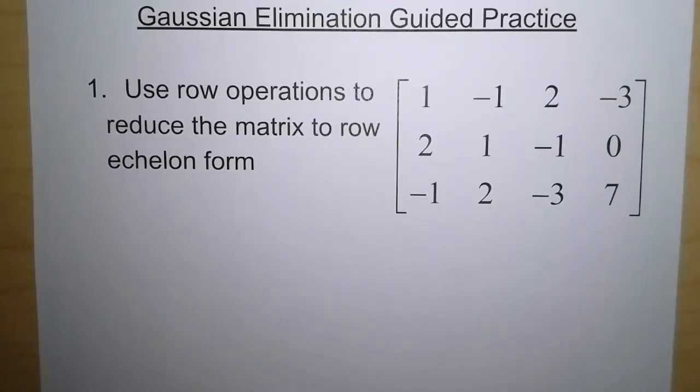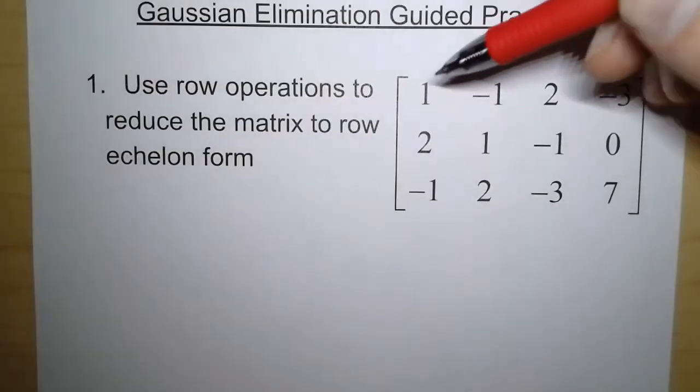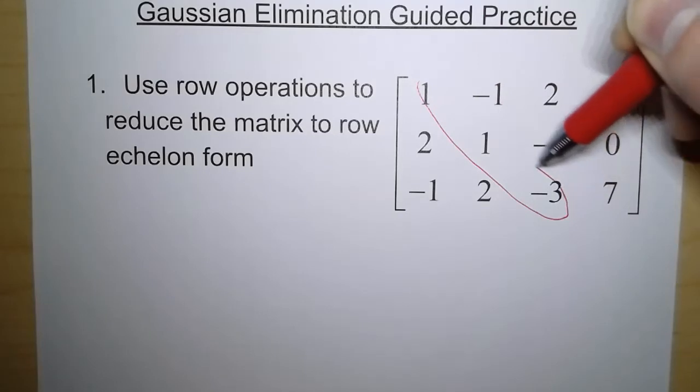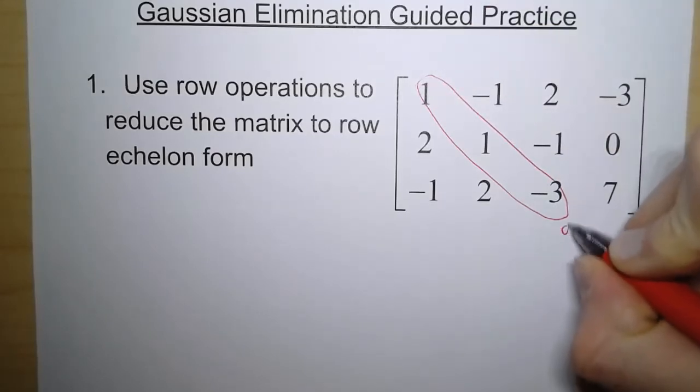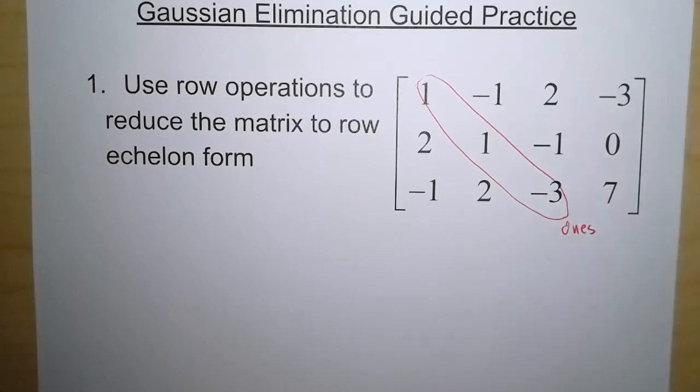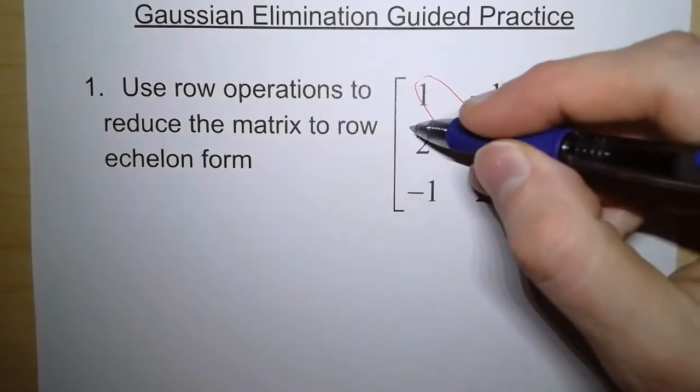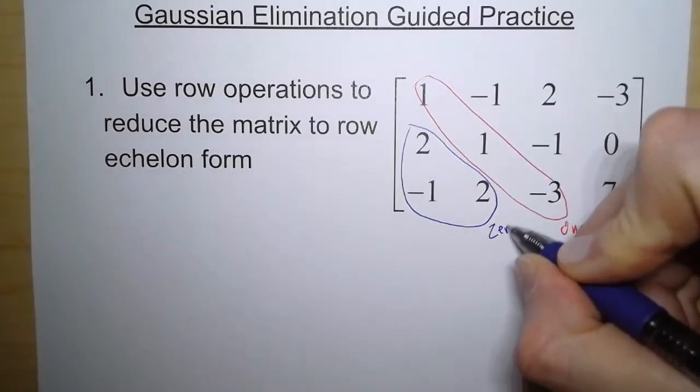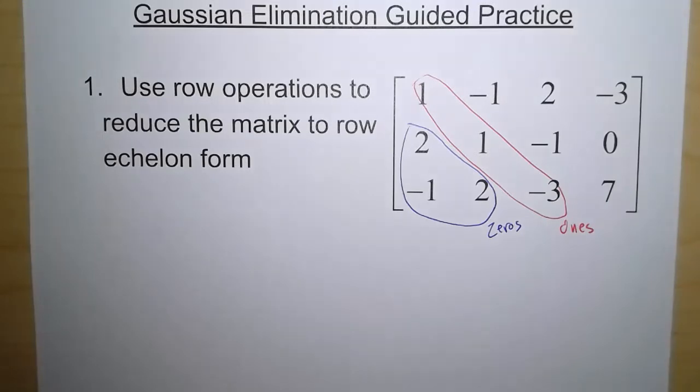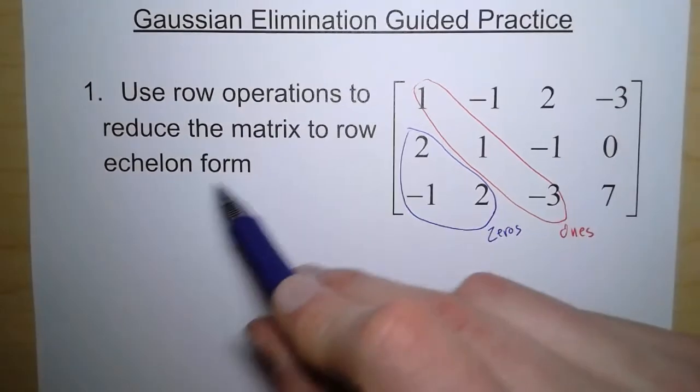So what are we doing here? When you look at a matrix, you want to look at this diagonal of numbers. What we want is all of these to be ones. That's what we're going for when we do Gaussian elimination. And then we want all of these numbers right here to be zeros. So how do we get there? We use row operations.